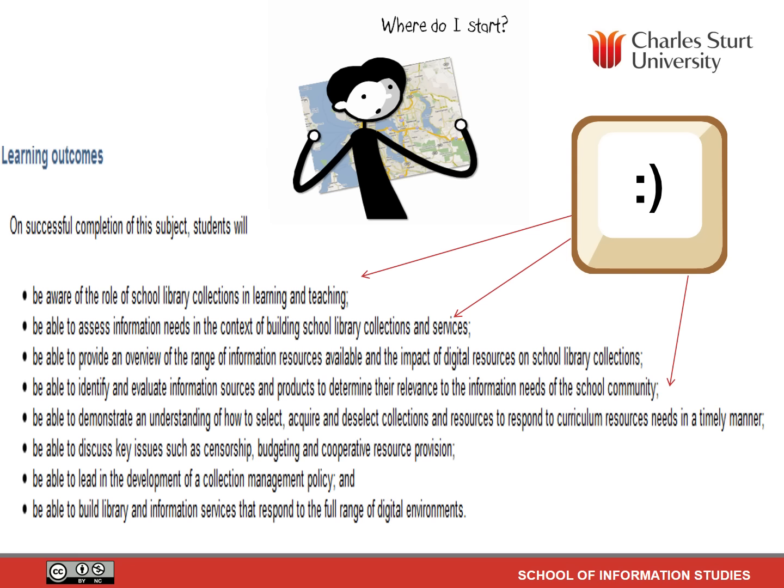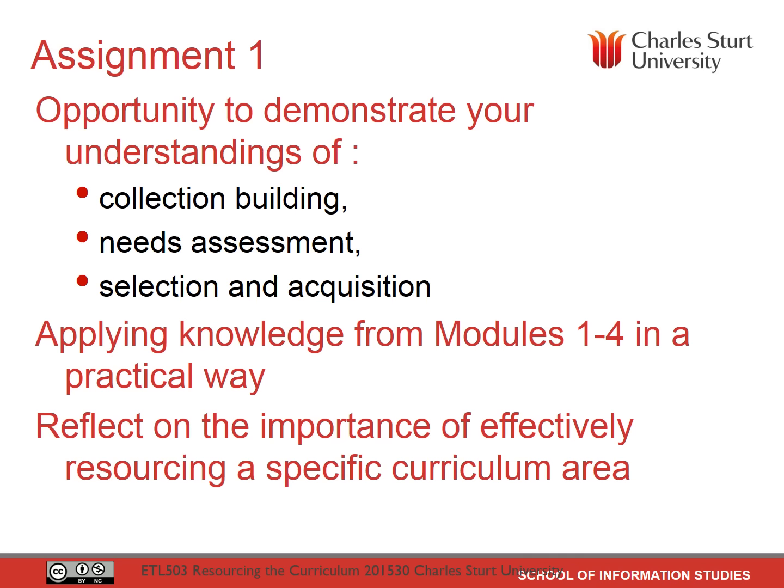There are over 100 students in this cohort, and in order to give you the kind of useful feedback you like, we do like to give a lot of feedback. That's the overview. The learning outcomes particularly relevant for this task are: first, be aware of the role of school library collections in learning and teaching; be able to assess information needs in the context of building school library collections and services; and number four, be able to identify and evaluate information sources and products to determine their relevance to the information needs of the school community.